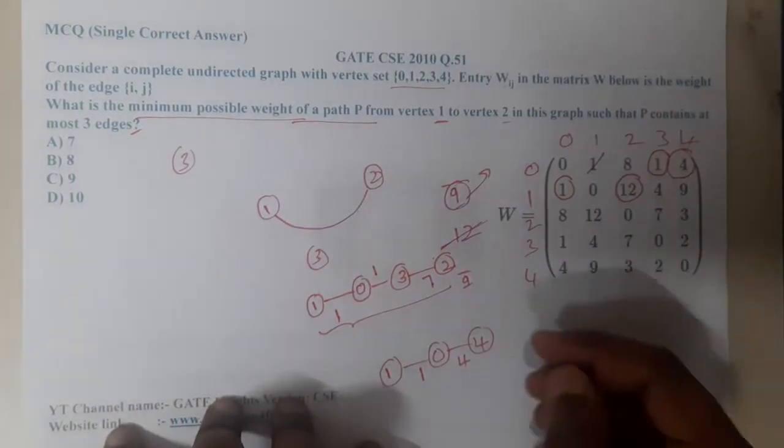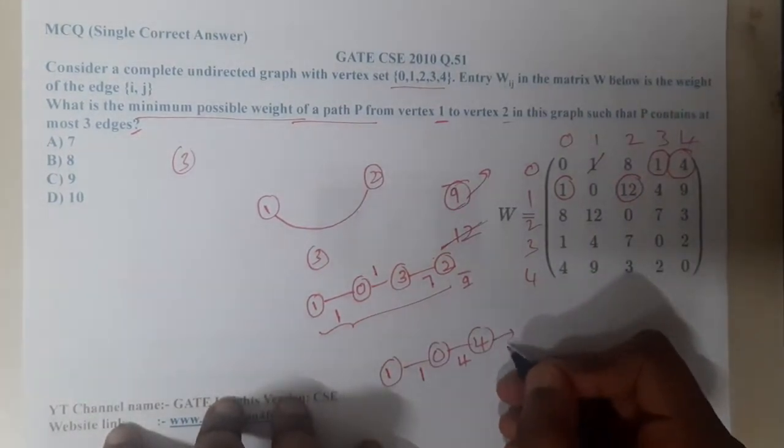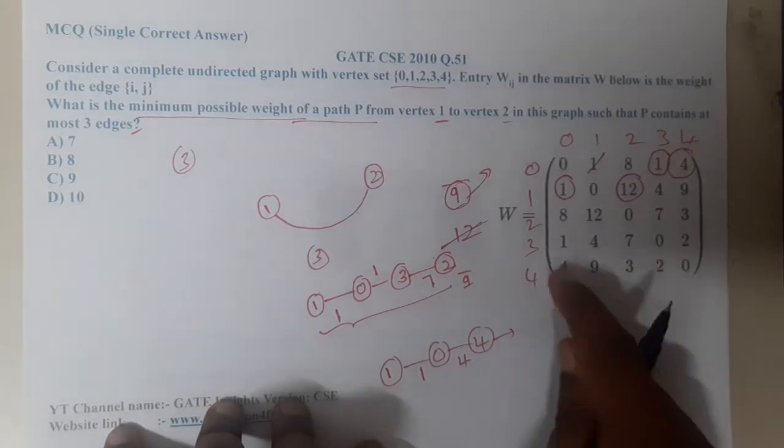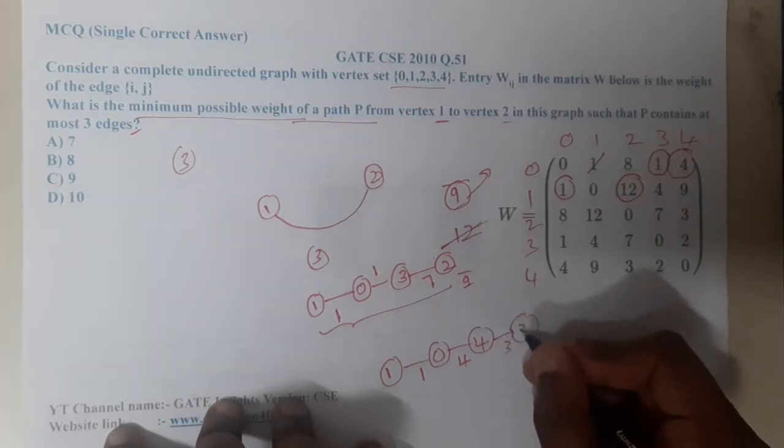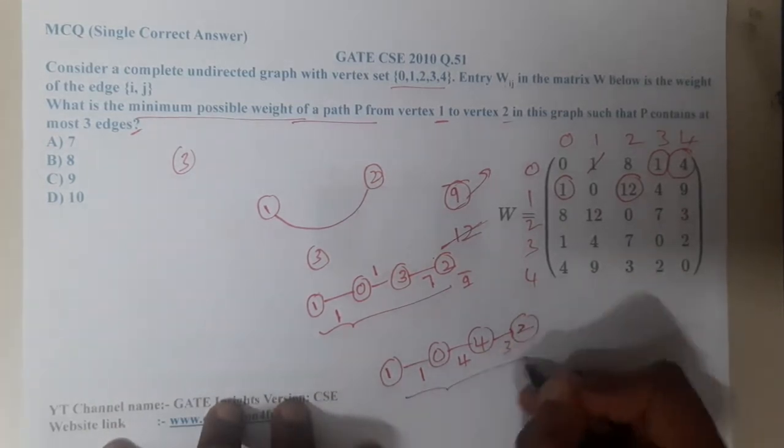From 4 can I reach 2? Yes, the cost is 3. This seems to be cheap. I can reach 2. What is this cost? 4 plus 1 is 5, 5 plus 3 is 8. I think 8 is the minimum cost.